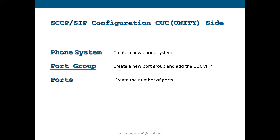If you choose SCCP, it will ask for MWI on and MWI off extension numbers, which you also need to create in CUCM. If you choose SIP, it will not ask for MWI on and off extensions, because SIP integration sends only NOTIFY messages to the phone — that is the main difference between SCCP and SIP configuration on the Unity side. Then add the CUCM IP and specify the number of ports you want to use.